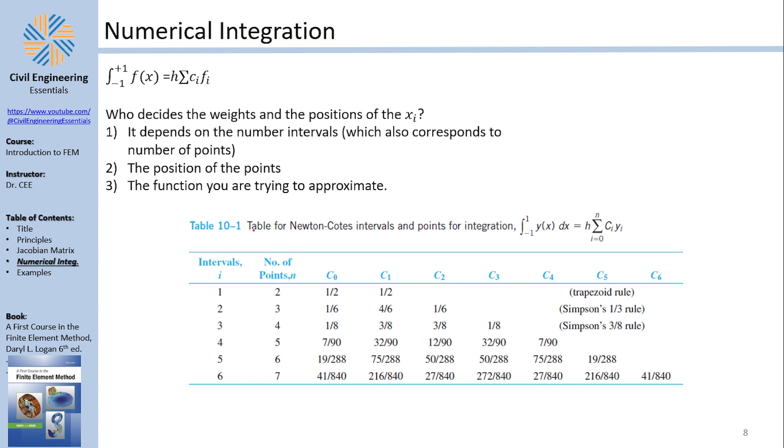It's called the table for Newton-Cotes interval and it approximates the integration from negative one to one using this, and you can choose two points, three points, four points and so on. This will give you the weights of the points, you can see half and half here and everything is perfect. Now of course you can take three points which will give you the Simpson's one-third rule and so on. It's kind of interesting, you should look into that.